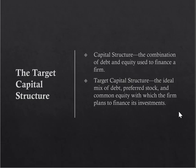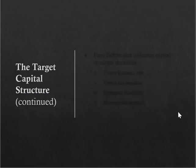The target capital structure is the ideal mix of debt, preferred stock, and common equity with which the firm plans to finance its investments. We saw with Unilate that it was 45% debt, 5% preferred stock, and 50% equity. How did they get there?